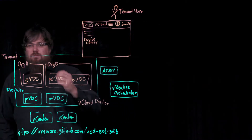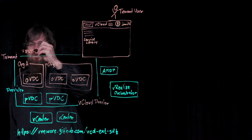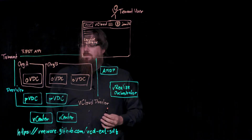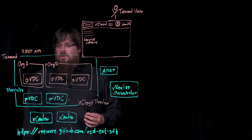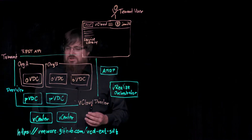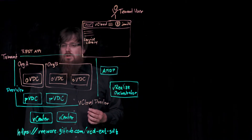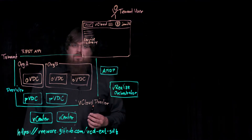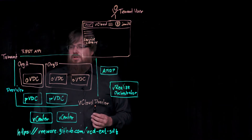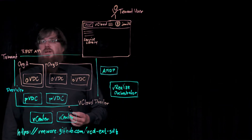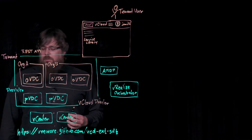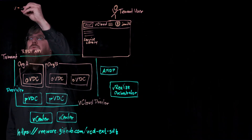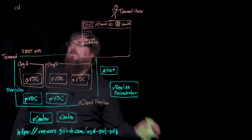First of all, vCloud Director provides a REST API that allows tenants and providers to automate all sorts of tasks in vCloud Director. The REST API is documented either in the documentation guide or in a Swagger-based documentation directly in vCloud Director itself. We do provide a bunch of different client bindings for this REST API. For the REST API, to make it more comfortable and easier to use, we have a command line called vCD-CLI.